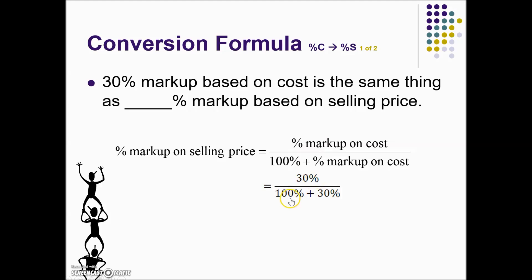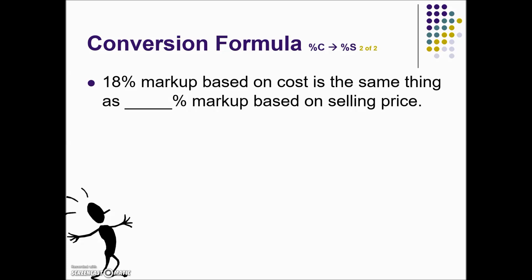We have 30% over 100% plus that percent markup on cost. Simplifying the denominator and converting these percentages to an equivalent decimal, then doing the division, and last we convert this decimal to a percent, rounding to the nearest tenth — an equivalent markup based on selling price is 23.1% given a 30% markup based on cost.